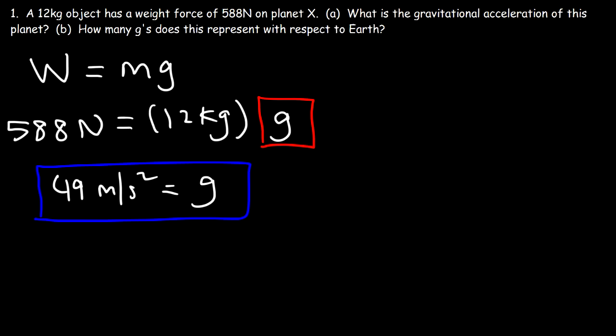Now part B, how many g's does this represent with respect to Earth? The gravitational acceleration of Earth is 9.8 meters per second squared. So we need to compare 49 to 9.8. And we can convert it.